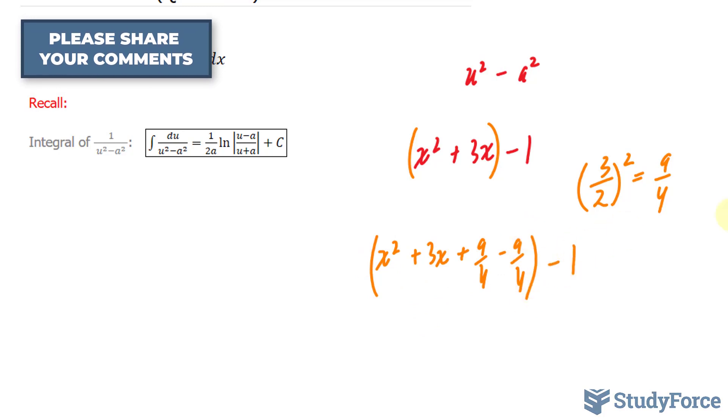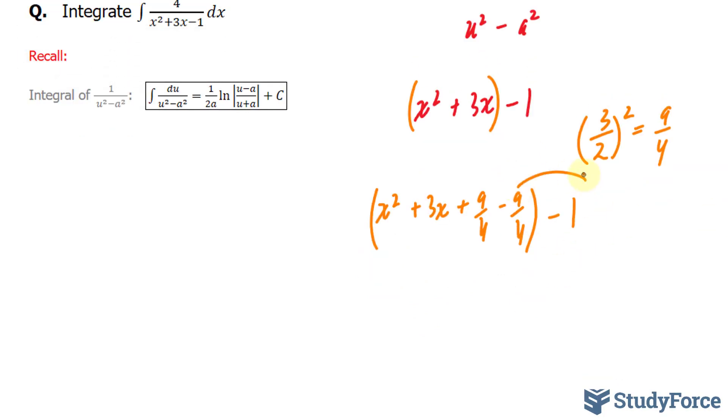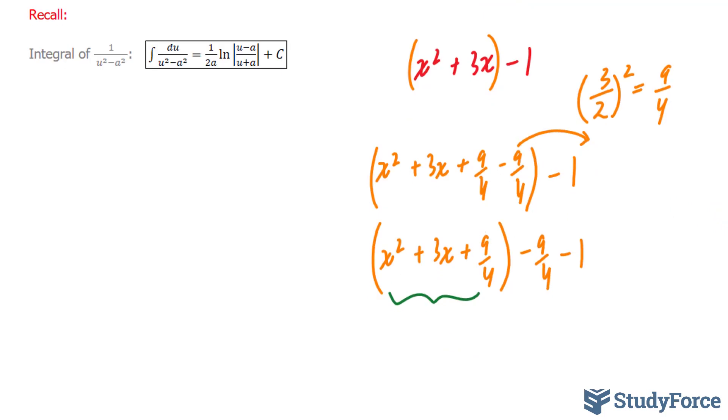Brackets minus 1. Next step is to take out this negative 9 over 4. This gives us x to the power of 2 plus 3x plus 9 over 4 minus 9 over 4 minus 1. You'll notice now that we have a perfect square trinomial.